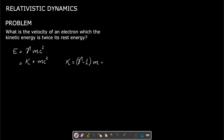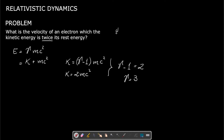Here we have that the kinetic energy is twice the rest energy, so gamma minus 1 equals 2, meaning gamma equals 3. We need to find the velocity u in terms of the speed of light c — called beta. For an electron under this condition, gamma is 1 over the square root of 1 minus u squared over c squared.